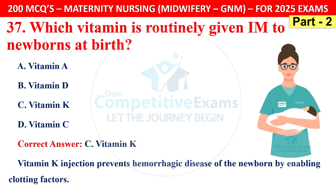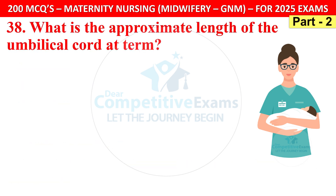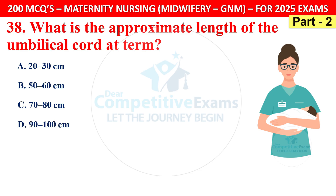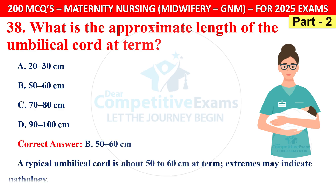Question 38: What is the approximate length of the umbilical cord at term? Options are 20–30 cm, 50–60 cm, 70–80 cm, or 90–100 cm. The correct answer is B — 50–60 cm. A typical umbilical cord is about 50–60 cm at term; extremes may indicate pathology.